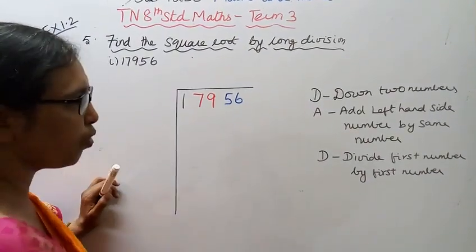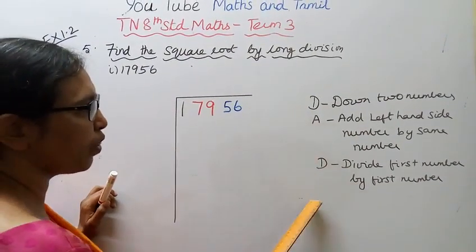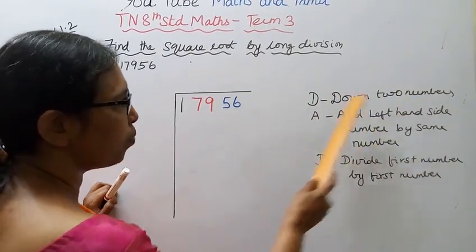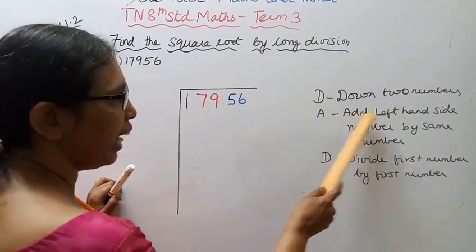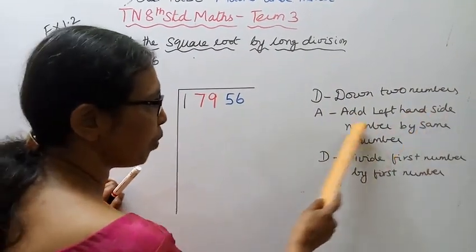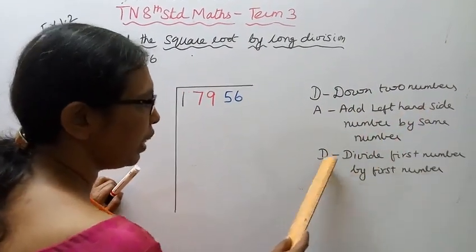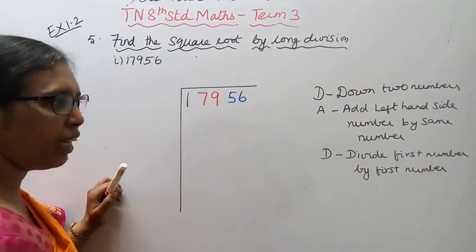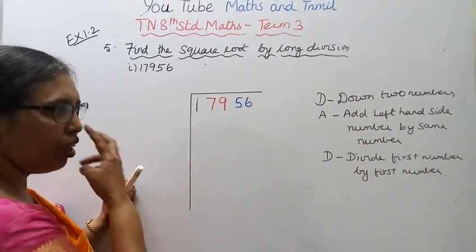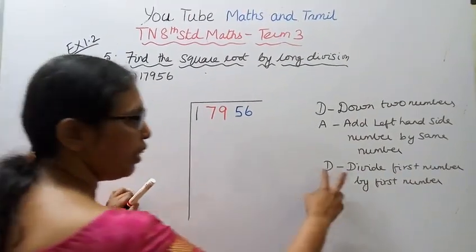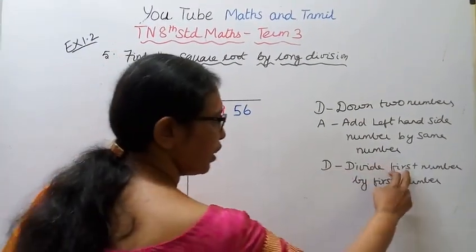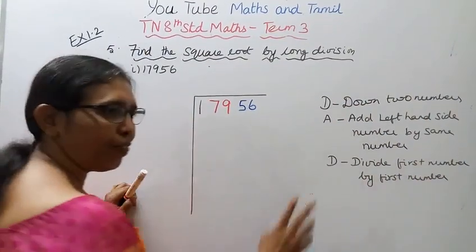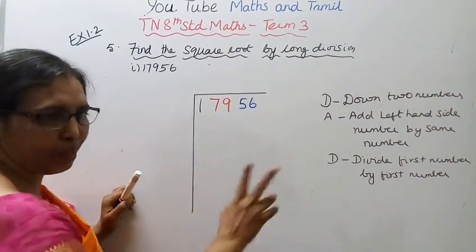Remember, follow these easy steps: D — bring down 2 numbers. A — add left hand side number by the same number. D — divide the first number by the first number. Let's divide the first two numbers by the first number.